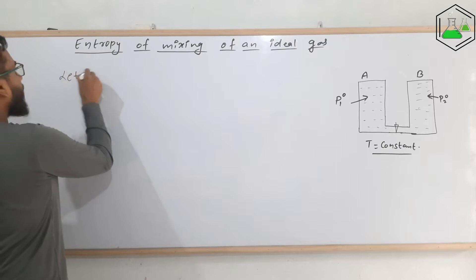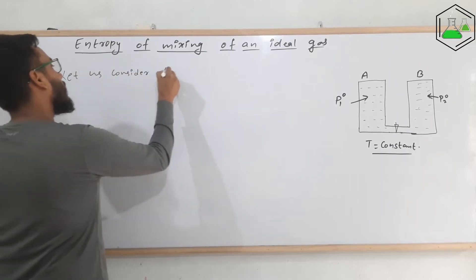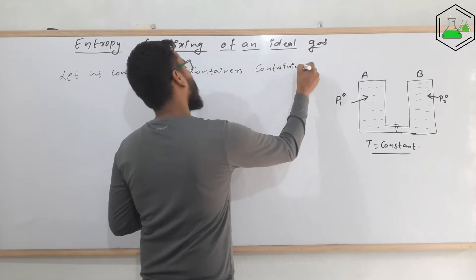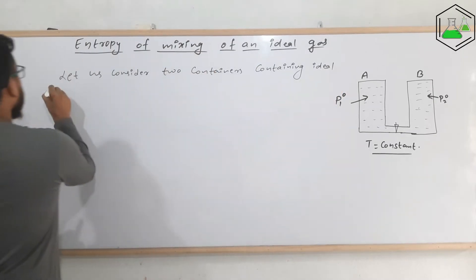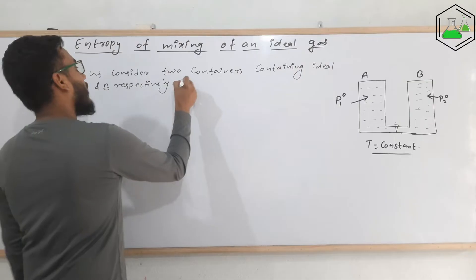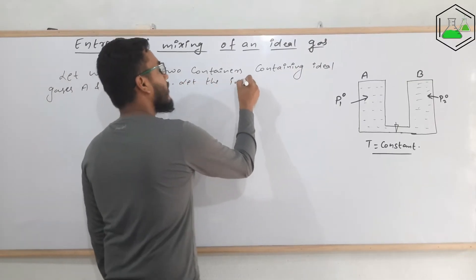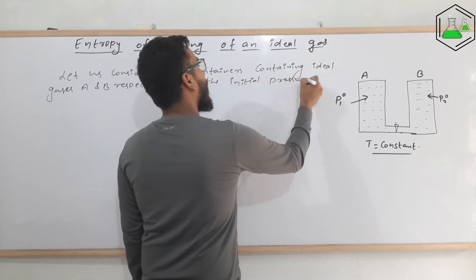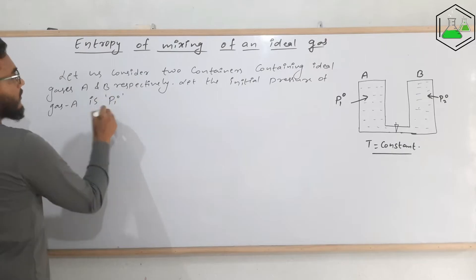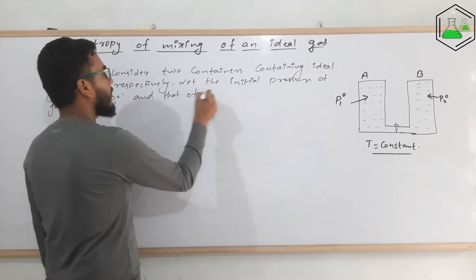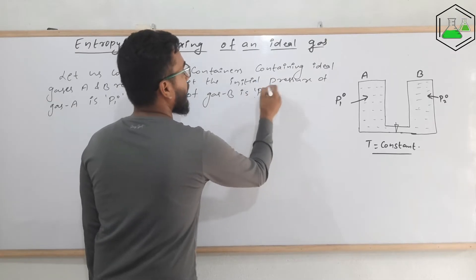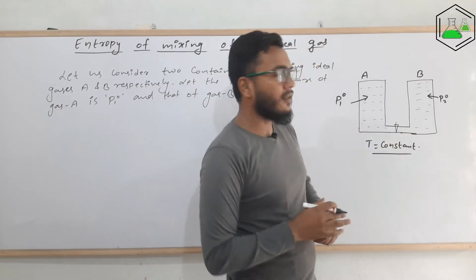Let us consider two containers containing ideal gases A and B respectively. Let the initial pressure of gas A be p1 naught and that of gas B be p2 naught. This is the general consideration.